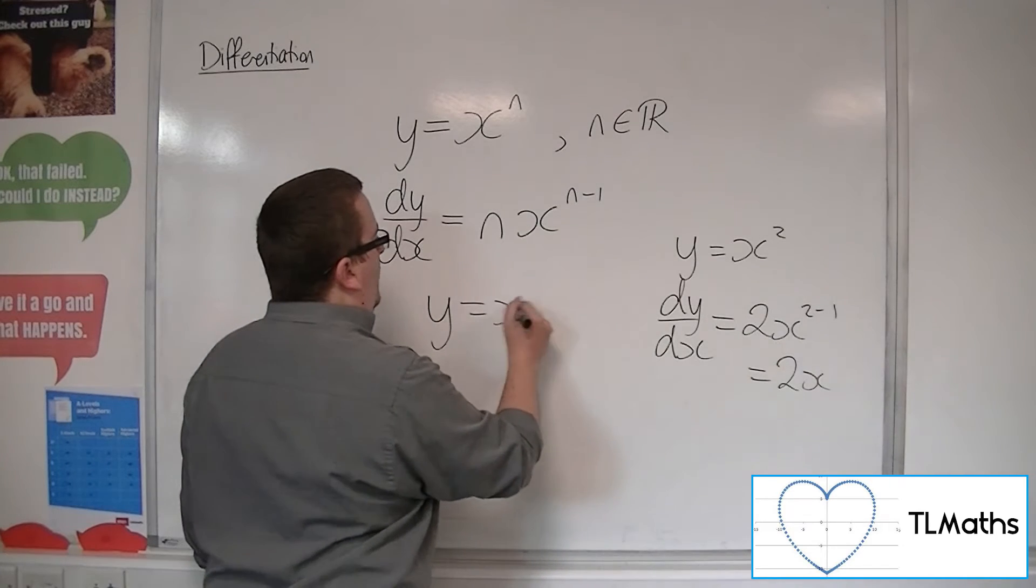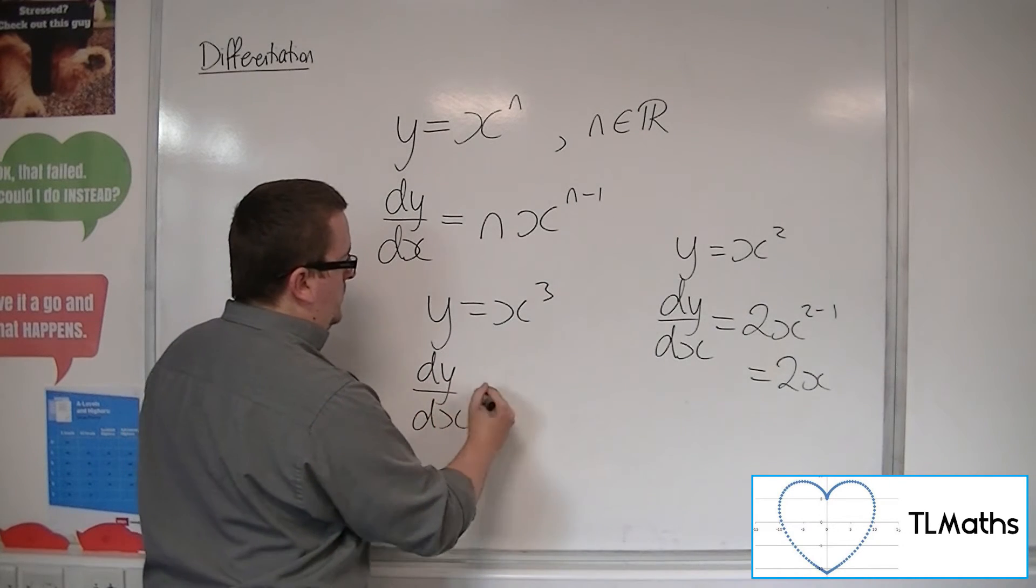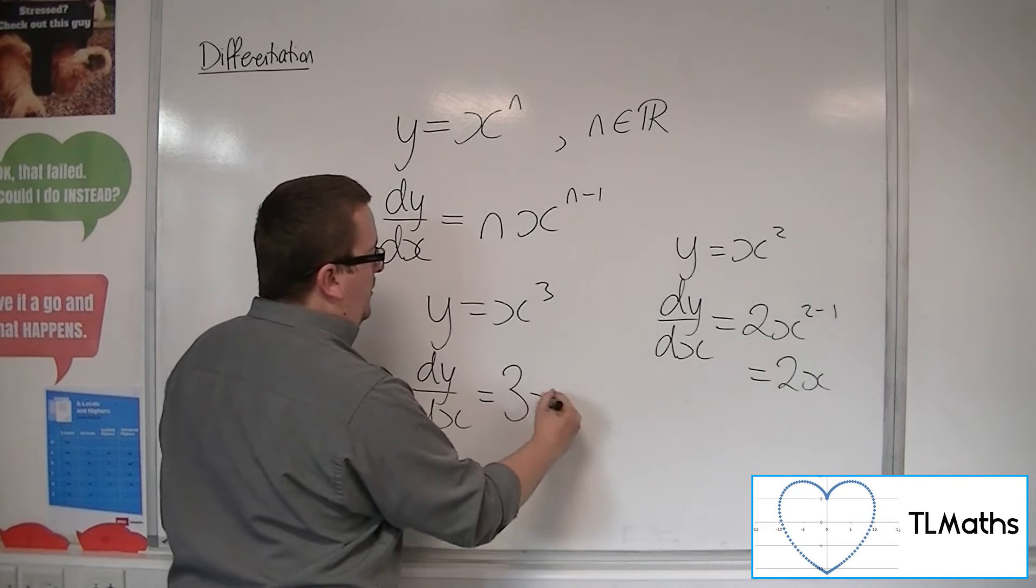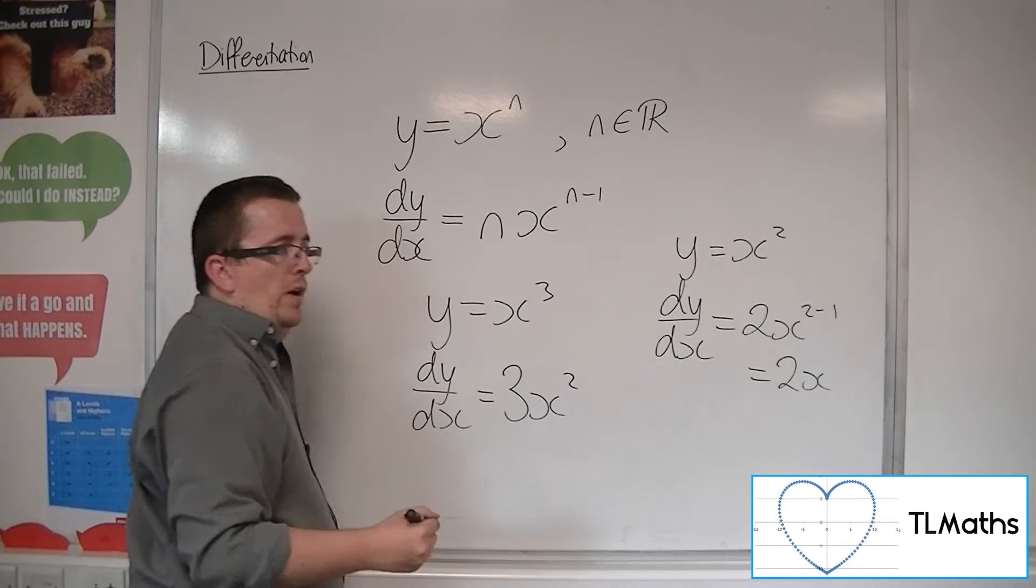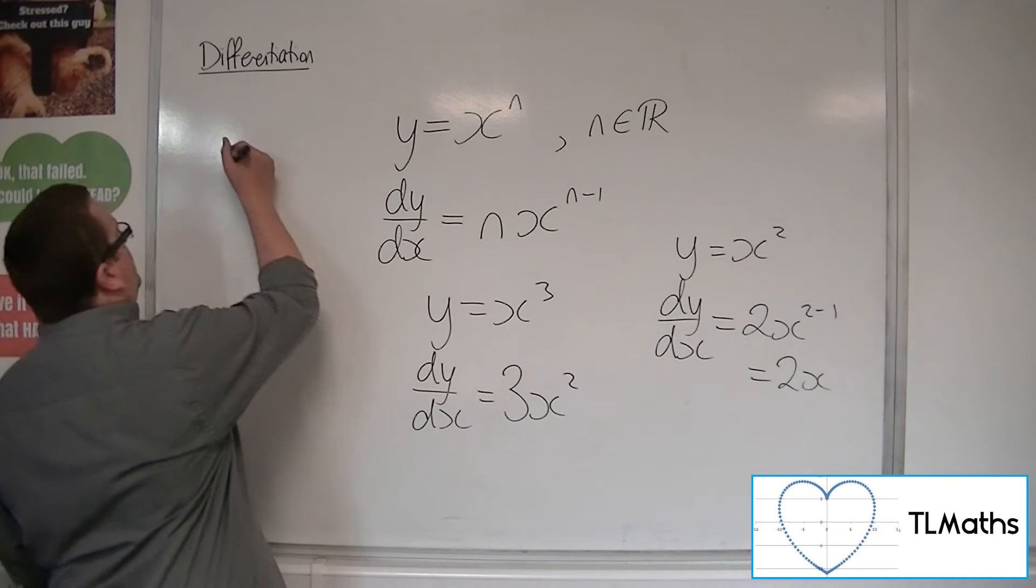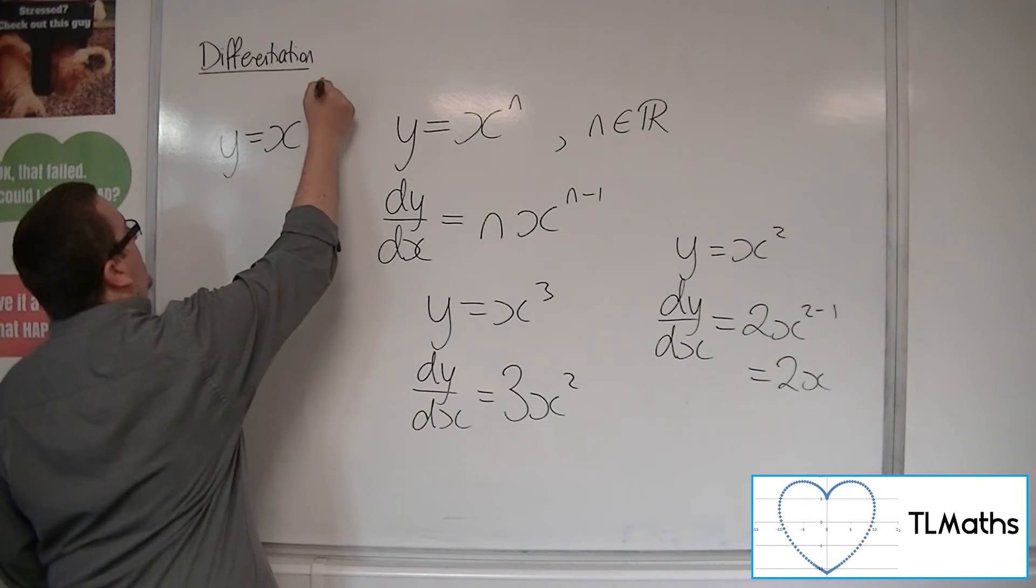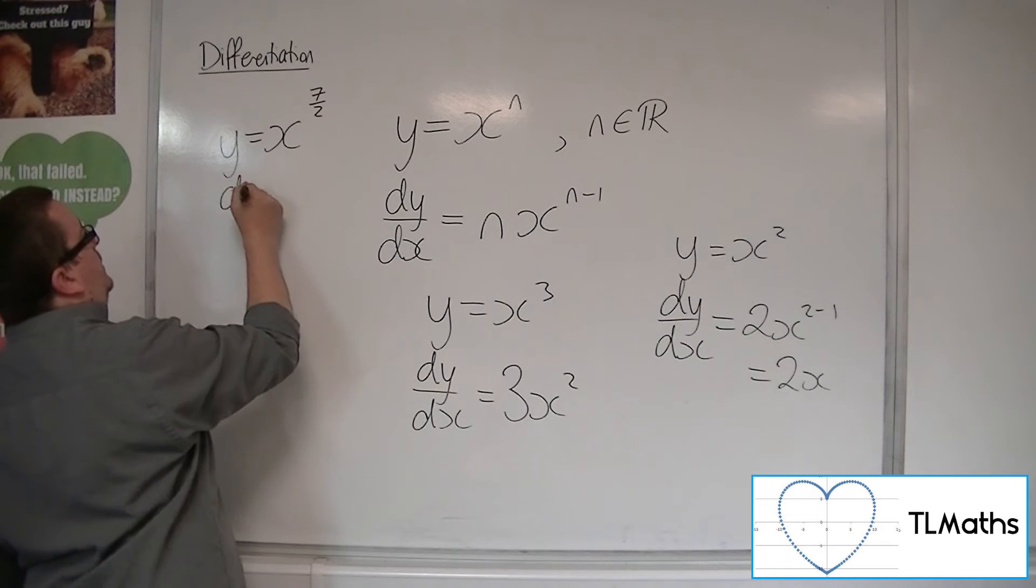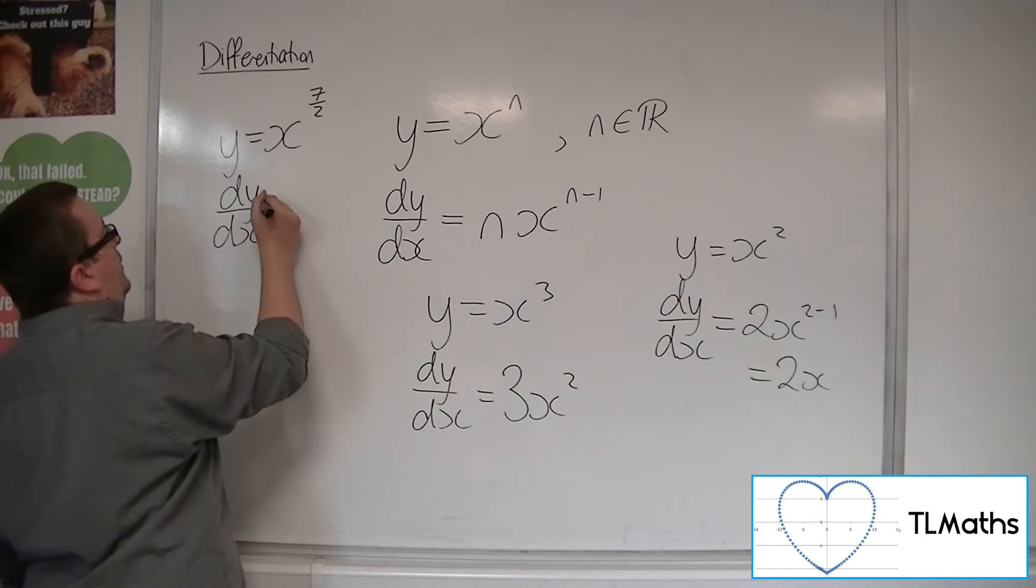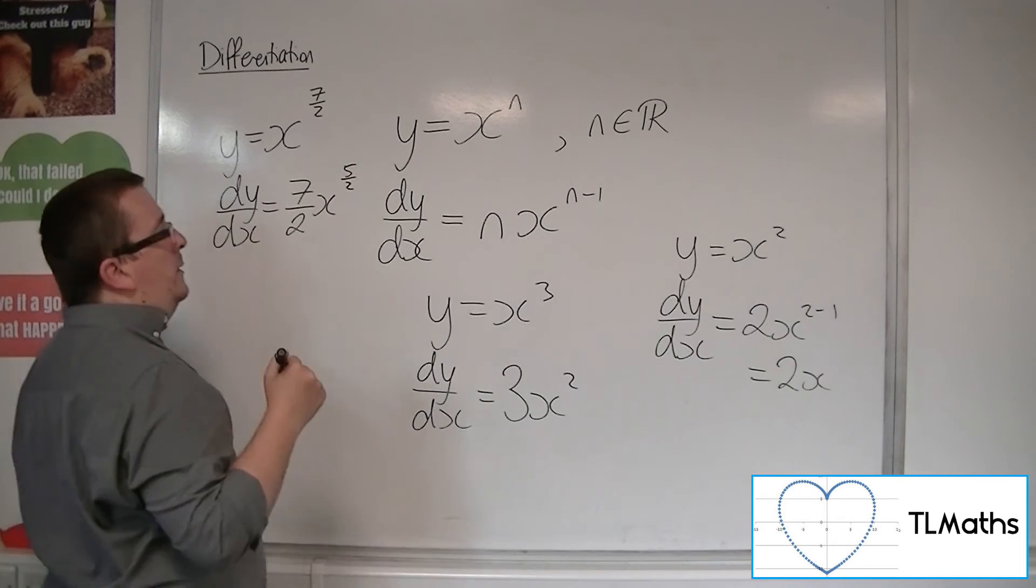So in a similar way, y equals x cubed, dy by dx, the 3 comes down to the front, take 1 off the power. If you go to a rational number, so let's say 7 halves, dy by dx, the 7 halves comes down to the front, multiplies with the x, take 1 off the power.